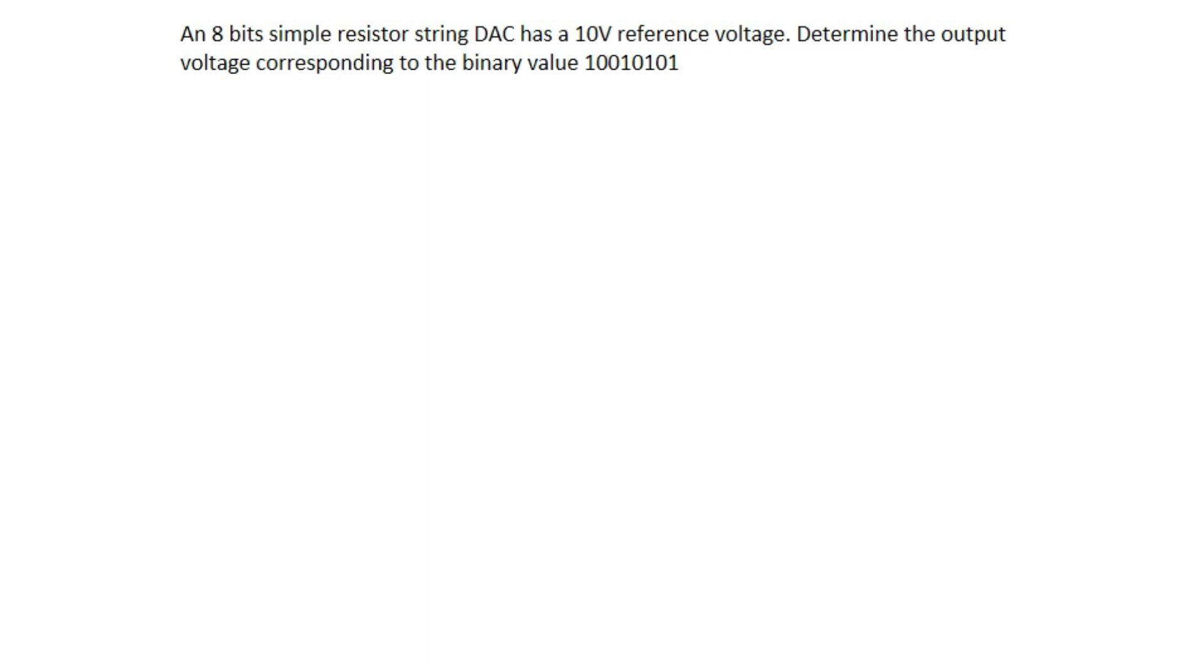Now from the question we are told that it is an 8-bit simple resistor string, that means our number of bits which is represented by small n is given as 8, since it is 8 bits.